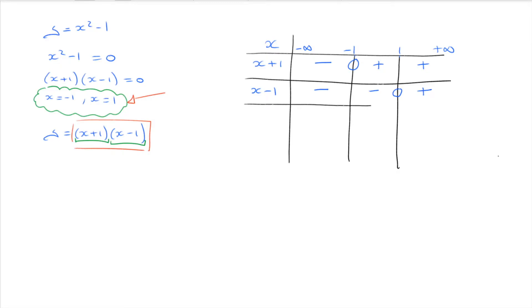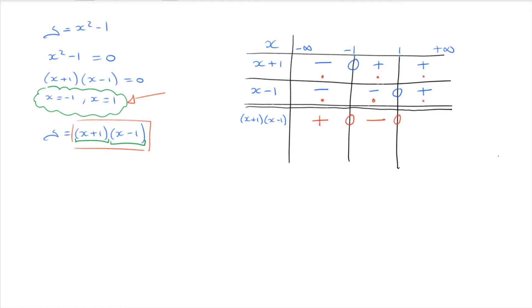We add a double line to highlight that we're reaching the final row, which gives the product of the two factors: x plus 1 times x minus 1, which equals x squared minus 1. Between negative infinity and negative 1, it's negative times negative, so positive. At negative 1, it's zero. Between negative 1 and 1, it's positive times negative, so negative. At 1, it's zero again. For x values greater than 1, it's positive times positive, so positive. We've just created the sign table for x squared minus 1.